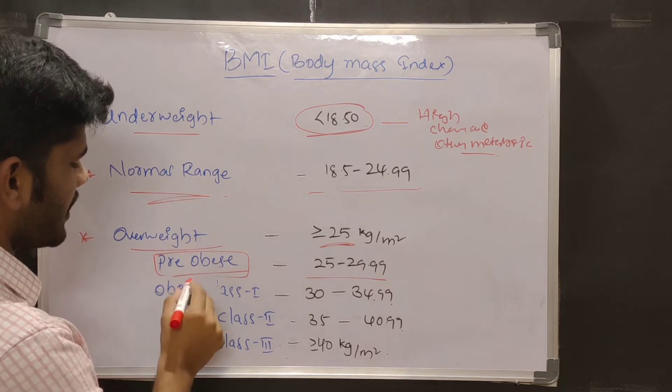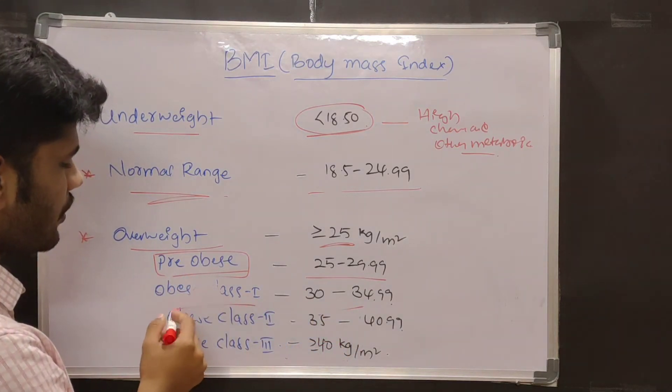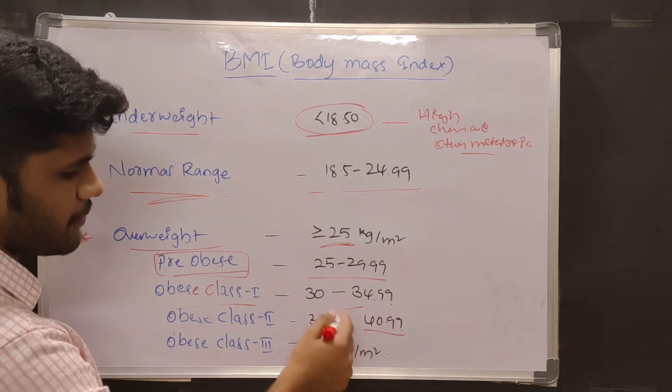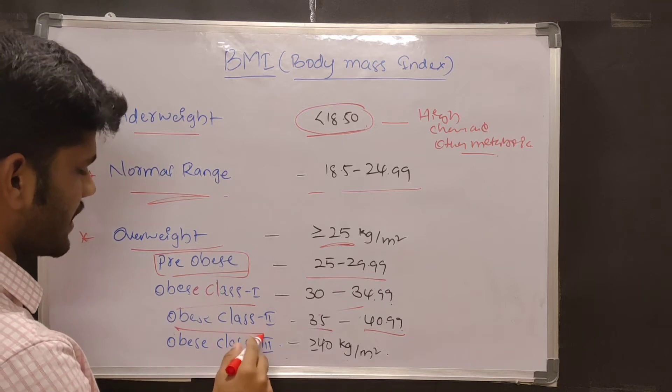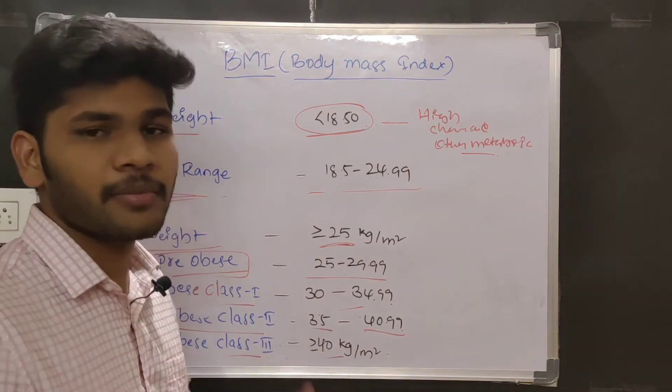And BMI ranging from 30 to 34.99 is considered as obese class 1, and BMI ranging from 35 to 40.99 is considered as obese class 2, and BMI more than or equals to 40 kg per meter square is considered as obese class 3.